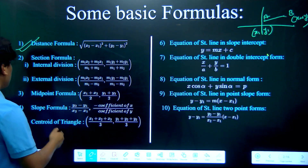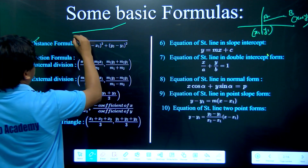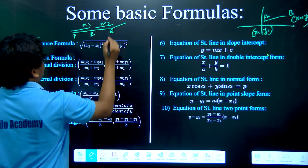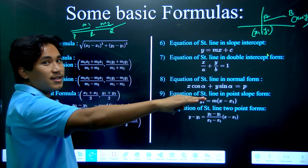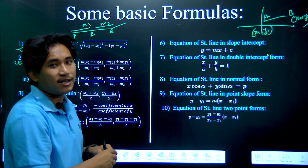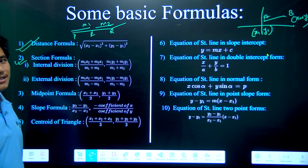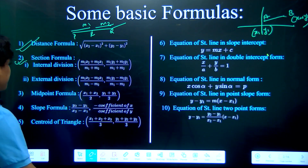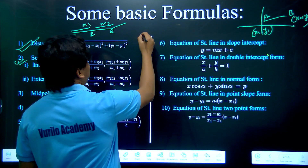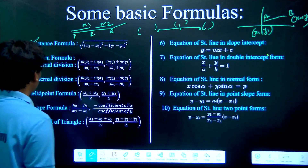The distance formula is the key — you can find the distance between two points on a line. If you have two units, you can find the internal division and external division using this formula. We also have the midpoint formula, so we can find the midpoint and change the line accordingly.